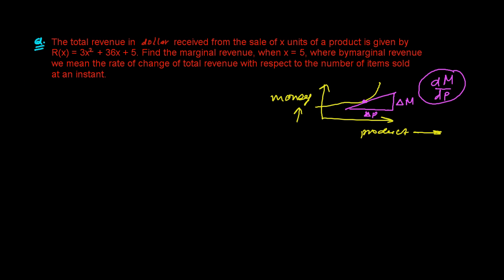So let's try to solve this question now here. The question is saying here, the revenue we generated R is 3x square plus 36x plus 5. So whenever I'm selling, like if I'm selling one product, then how much money I'm making.